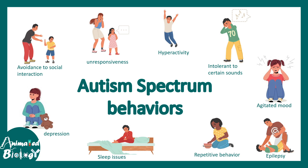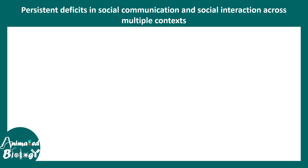Each of these phenotypes or symptoms cannot individually suggest that a child might be affected with autism. There are different criteria based on which autism spectrum disorders are defined, including a diagnostic manual known as DSM-5, which outlines specific criteria for autism spectrum disorder.